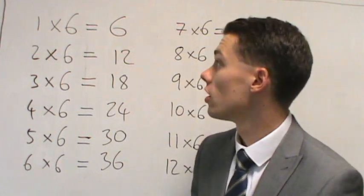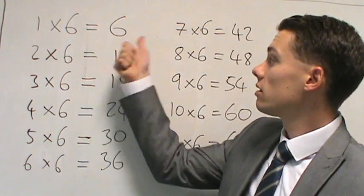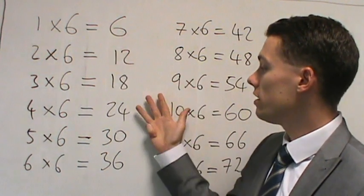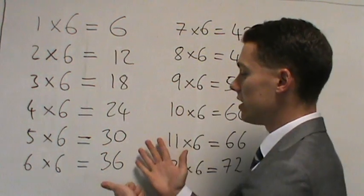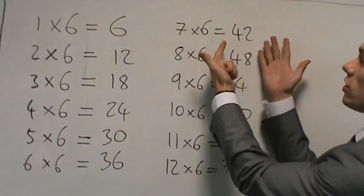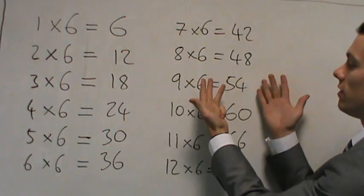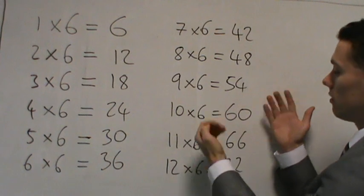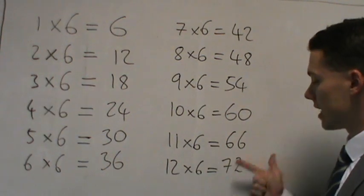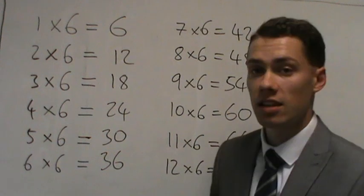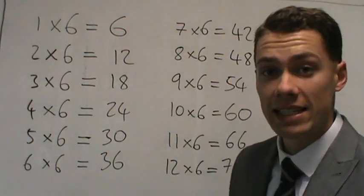So 6, 12, 18, 24, 30, 36, 42, 48, 54, 60, 66 and 72. So these are our six times tables. Hopefully you've been paying attention and you remembered a lot of them because I'm going to rub out two of them now.